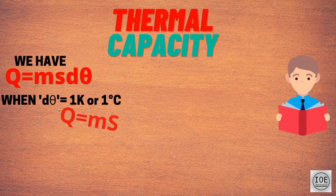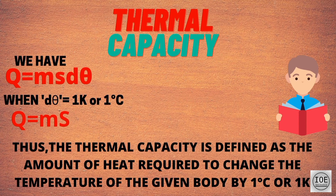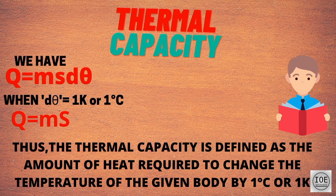Thermal capacity: from Q equals M times S times D-theta, when D-theta equals one Kelvin or one degree Celsius, then Q equals M times S. Thus, the thermal capacity is defined as the amount of heat energy required to change the temperature of a given body by one degree Celsius or one Kelvin.